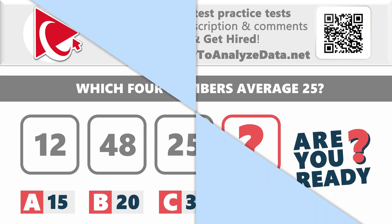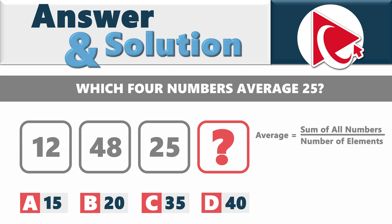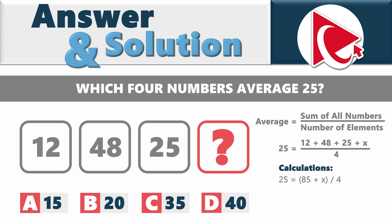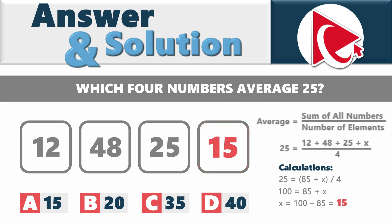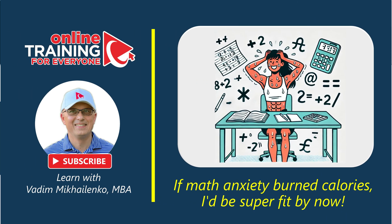Time's up. To solve this, recall that average equals the sum of all numbers divided by the count of elements. We set up the formula: 25 = (12 + 48 + 25 + x) / 4. Simplifying: 25 = (85 + x) / 4, so 100 = 85 + x, meaning x = 100 − 85 = 15. Verification: 12 + 48 + 25 + 15 = 100, and 100 / 4 = 25. The correct answer is choice A — 15.